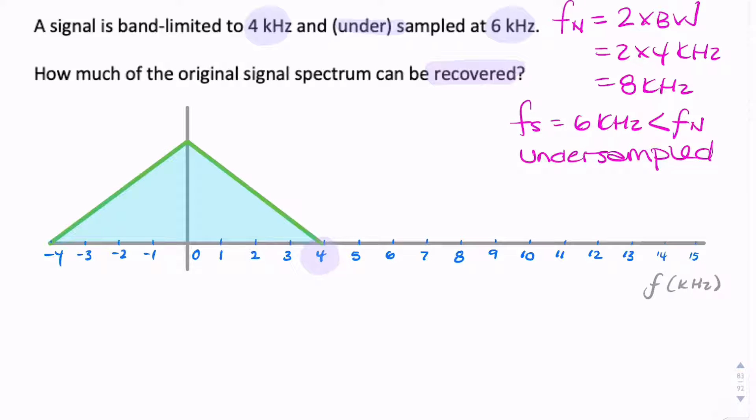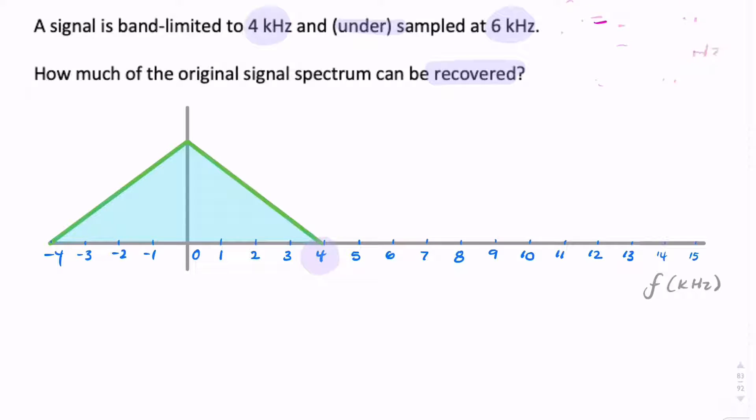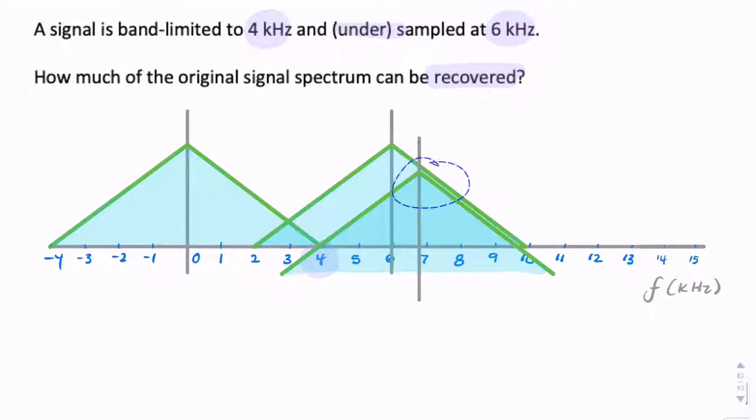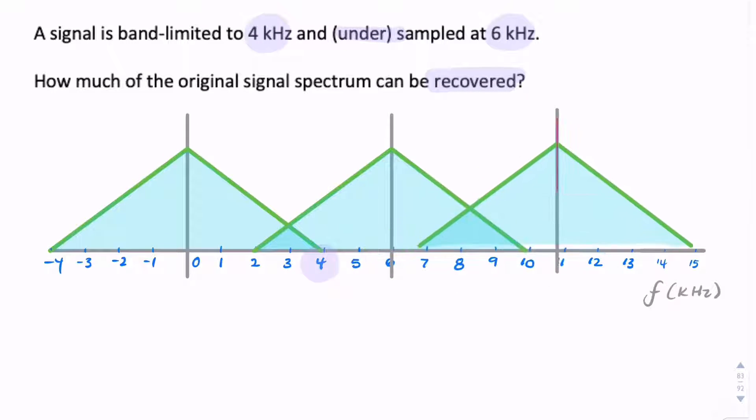And that's really easy, because the spectrum replicates, it copies itself. And we can keep adding these replicas at integer multiples of the sample rate. So a sample rate of 6 kHz. So we have replicas at 6, 12, 18, minus 6, minus 12. So it goes on in both directions, negative and positive.